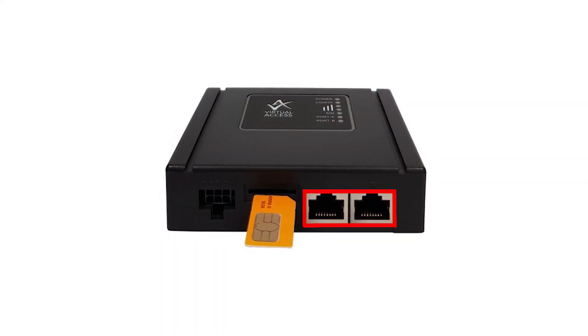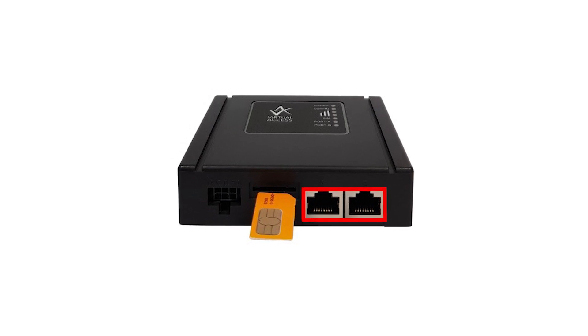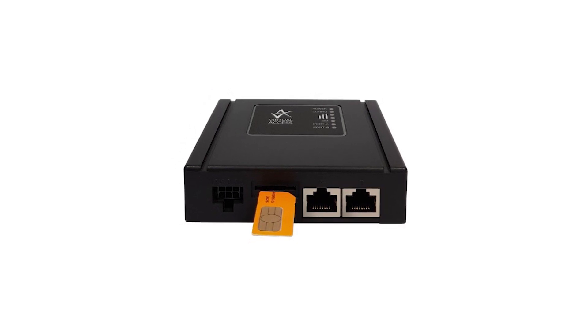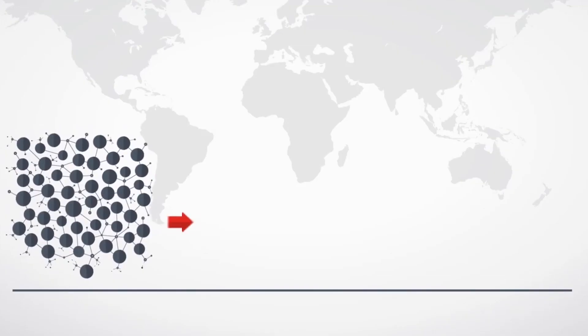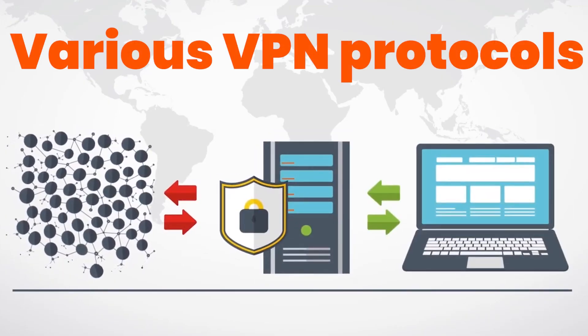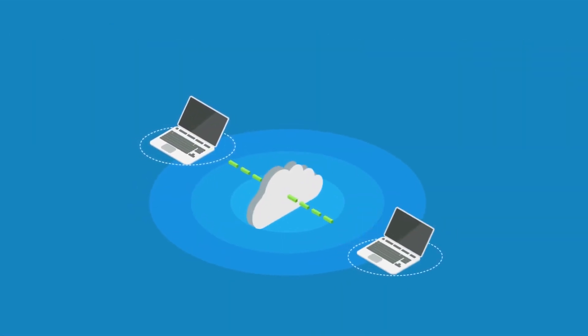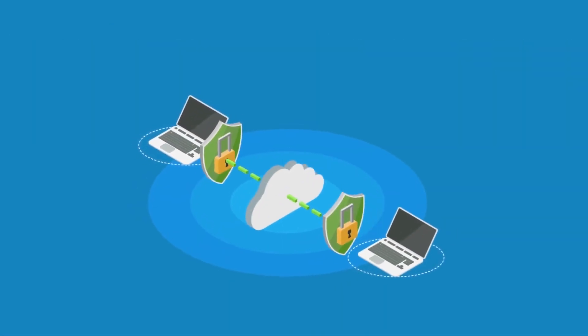Two Ethernet ports or LTE can be used as WAN links, as well as supporting various VPN protocols, firewall security, and telemetry protocols.